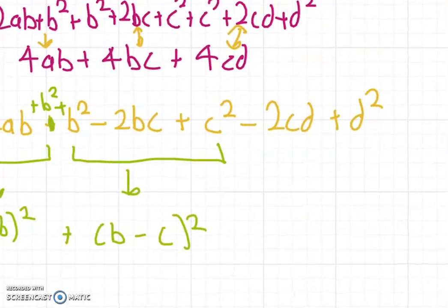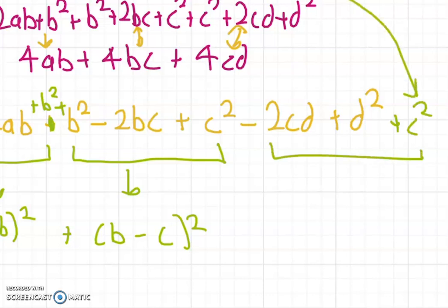There should also be a plus c² here as well from over here. Now if we have a look at c² + d² - 2cd, this can be factorized as (c-d)².